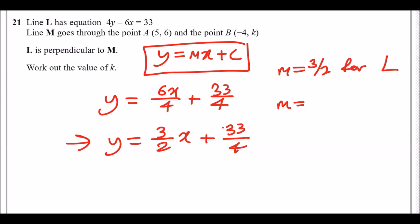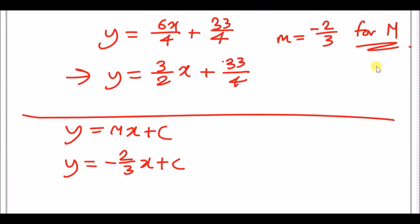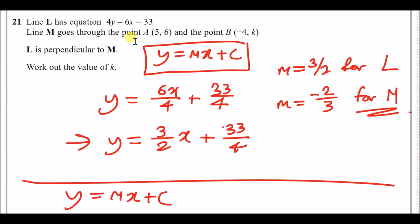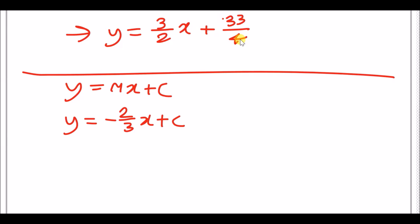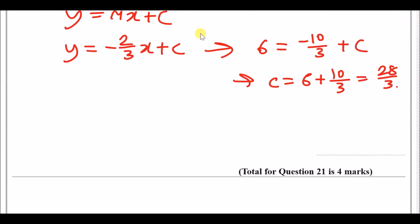Since lines L and M are perpendicular, the gradient of M is the negative reciprocal of L's gradient: minus 2/3. So line M has equation y equals minus 2/3 x plus c. Line M passes through point A at coordinates (5, 6), so substituting: 6 equals minus 2/3 times 5 plus c, giving c equals 6 plus 10/3, which is 28/3.